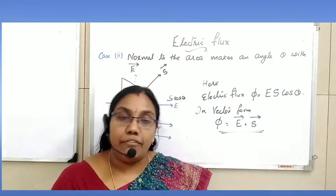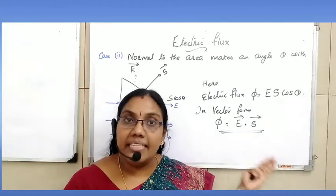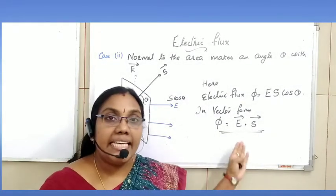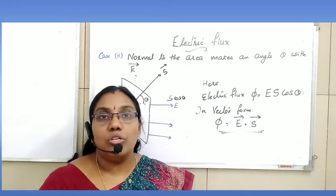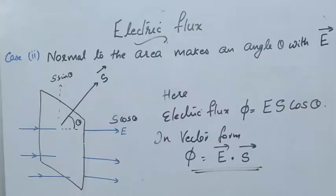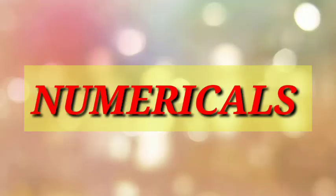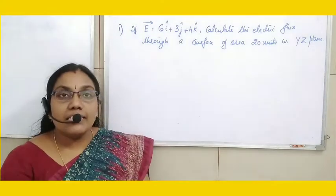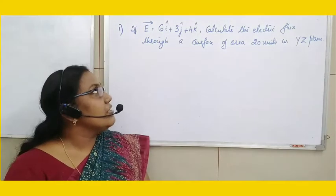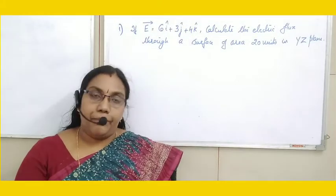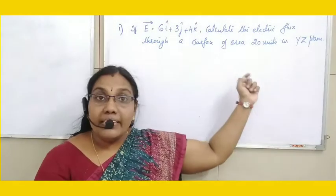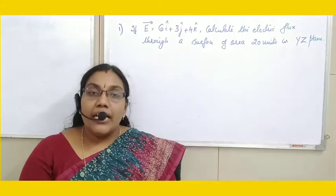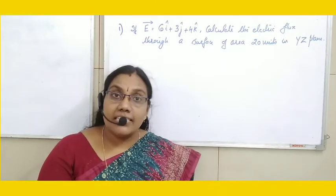This is the general formula for electric flux. If electric field and area vector are at angle theta, electric flux is given by φ = ES cos θ or in vector form φ = E⃗ · S⃗. Now we can do some numericals. First question: if vector E = 6î + 3ĵ + 4k̂, find the electric flux through a surface of area 20 units in the YZ plane.